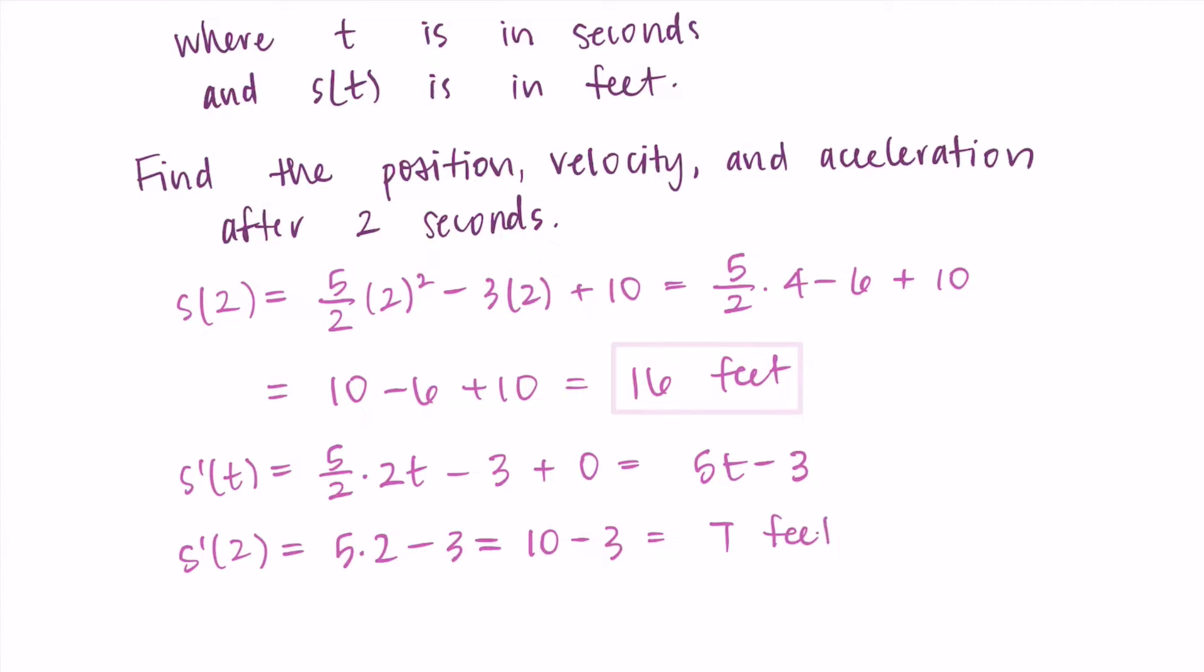And specifically, the units of the velocity here are feet per second. Remember, you can think of the derivative of position with respect to time—the position is measured in feet, the time is measured in seconds, so my units here are feet per second. So I found the position and the velocity at two seconds. I just need to find the acceleration after two seconds.